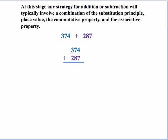So with that out of the way, we need to understand that at this stage, any strategy for addition or subtraction will pretty much typically involve a combination of the substitution principle, place value, the commutative property, and the associative property.